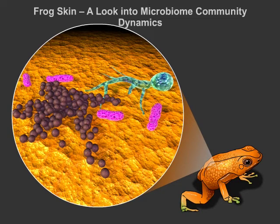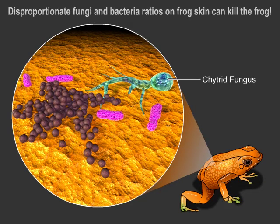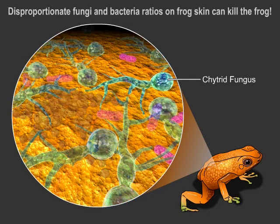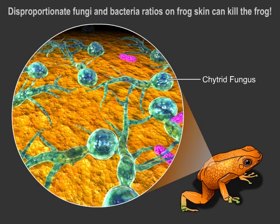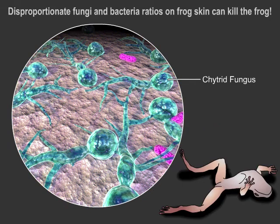Climate change in regions like South America has been associated with drastic amphibian biodiversity loss, most likely due to a skin disease caused by chytrid fungus. When chytrid or other fungi are disproportionately present, intense skin desiccation can occur, preventing the frogs from absorbing oxygen. This essentially suffocates the frogs.